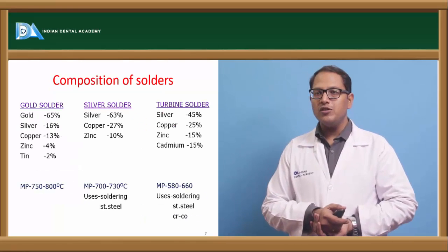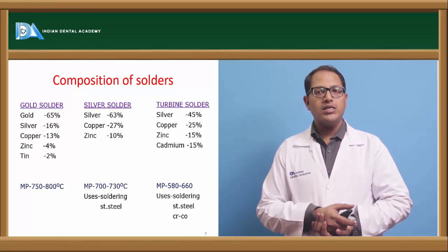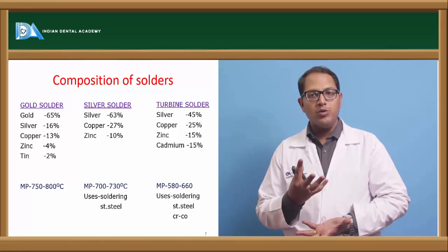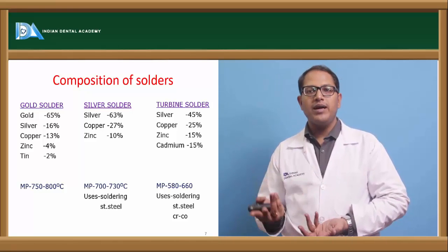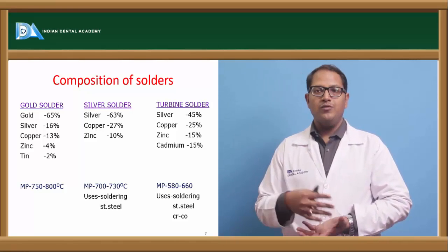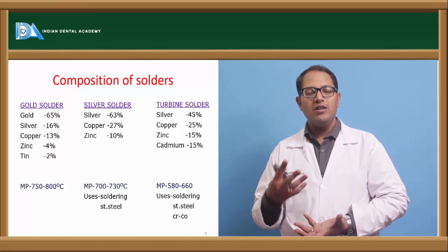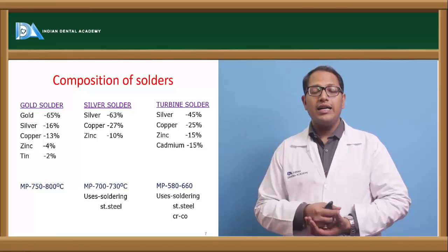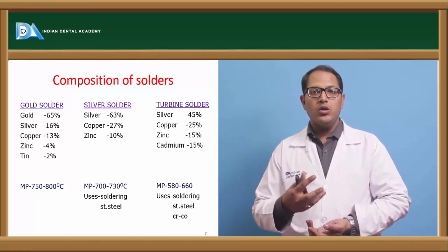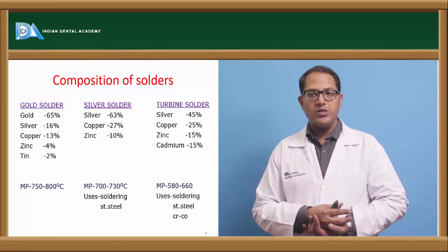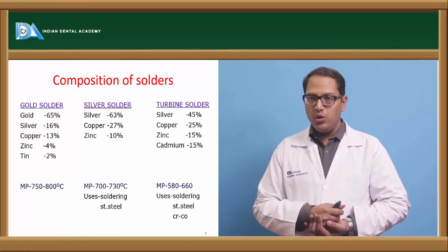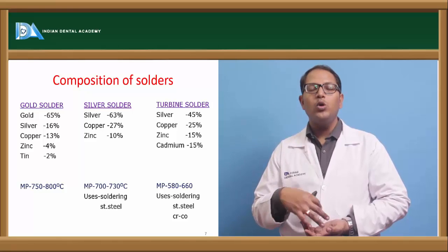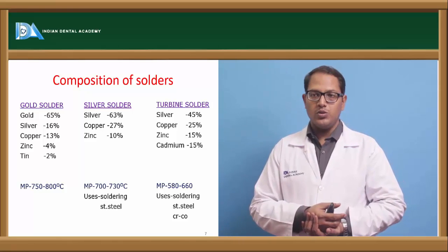Now we see the compositions of solders. We have gold solders, silver solders, and turbine solders. For gold solders, maximum composition will be gold. For silver, the maximum composition will be silver. For turbine solders, it is silver which is high grade and we have copper, zinc and cadmium. Whereas in a gold solder we also have copper, zinc, tin, and silver, but then silver content is low. Whereas compared to silver solder, we have no gold content as that of gold solder.